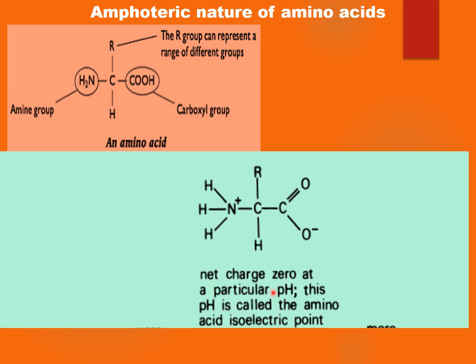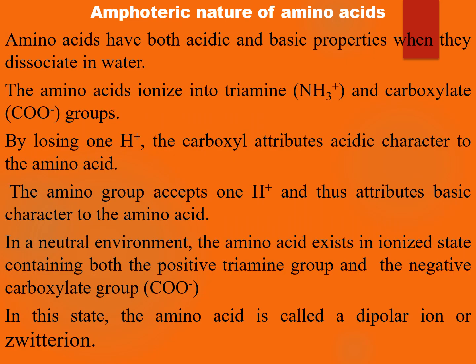The pH at which this zwitterion is formed is called the amino acid isoelectric point. This amphoteric nature of amino acids enables them to act as a buffer. Now let us discuss the buffering action of amino acids.